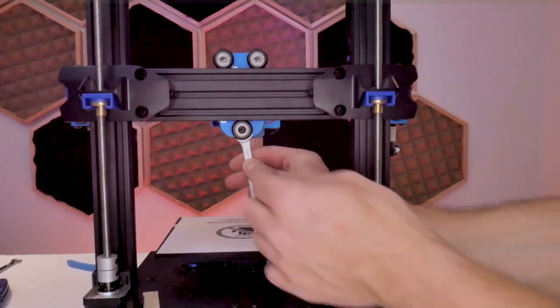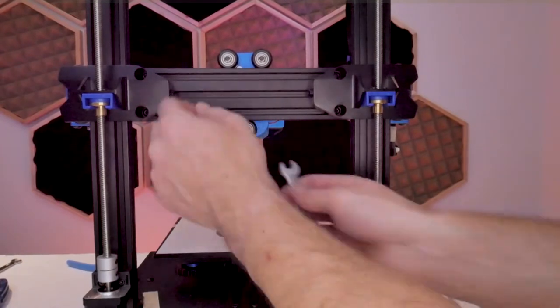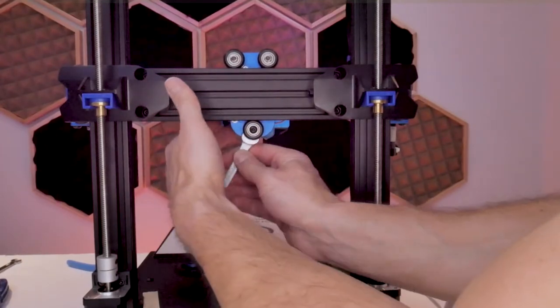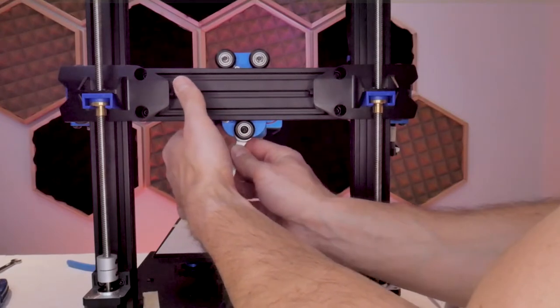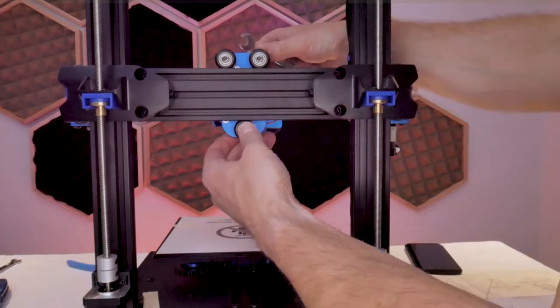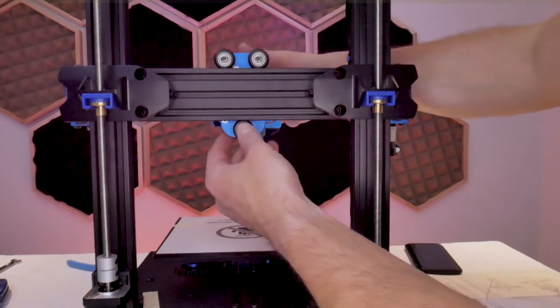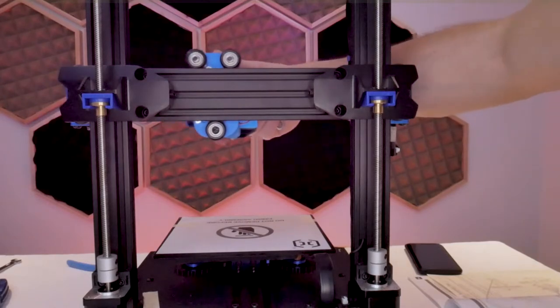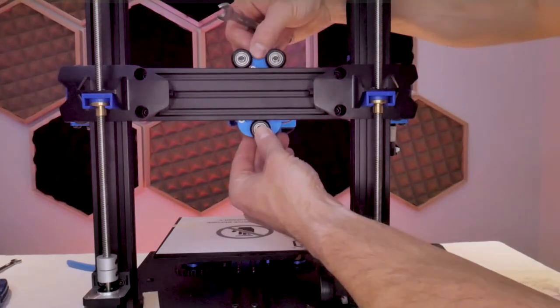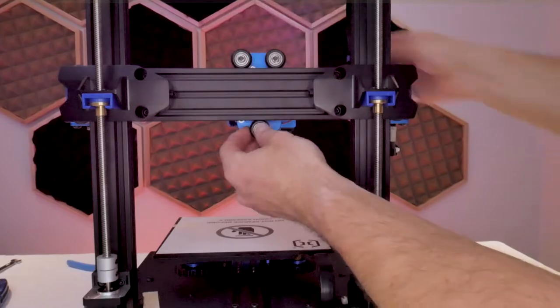Just a friendly reminder here that tighter is not better when it comes to v wheels. Over tightening those v wheels will lead to premature wear of the v wheels themselves, and when you go to slide the printhead back and forth you'll feel like there's a flat spot when those wheels are too tight. Ideally the motion should be very smooth and there should be no play back and forth or side to side in that system.